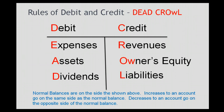The mnemonic for the rules of debit and credit is DEAD CROWL. A crowl is a cross between a crow and an owl — two birds — so they're dead birds: dead crowl. The normal balances are on the side shown above, which means the normal balance of expenses, assets, and dividends are debit balances. The normal balances of revenues, owners' equity, and liabilities are on the credit side of your T-account.